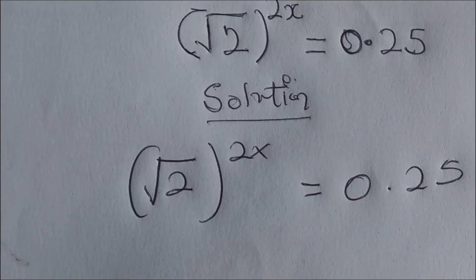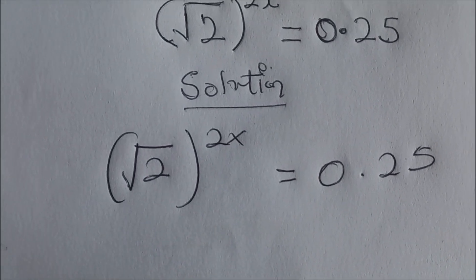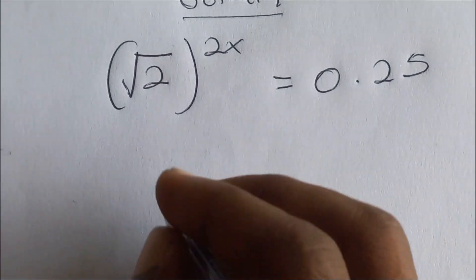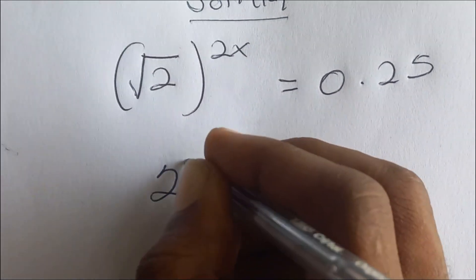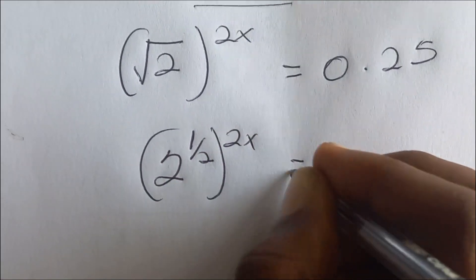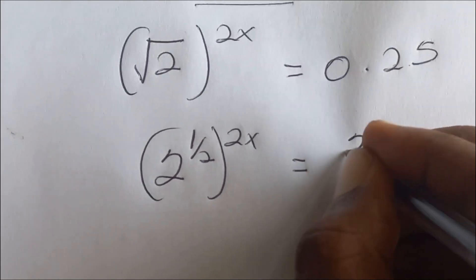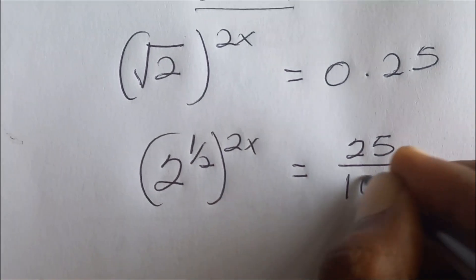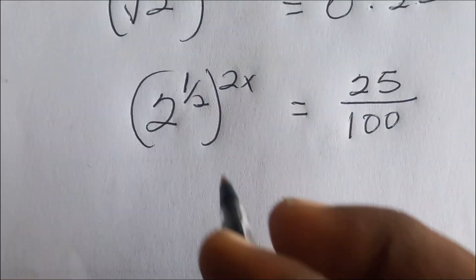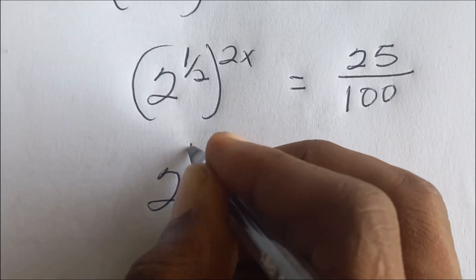We have root 2 exponent 2x is equal to 0.25. With this root 2, we can express it as 2 to the exponent half, okay. To the bracket exponent 2x is equal to — and this 0.25 is the same as 25 on 100. So this expression on the left hand side we can write as 2 exponent half.